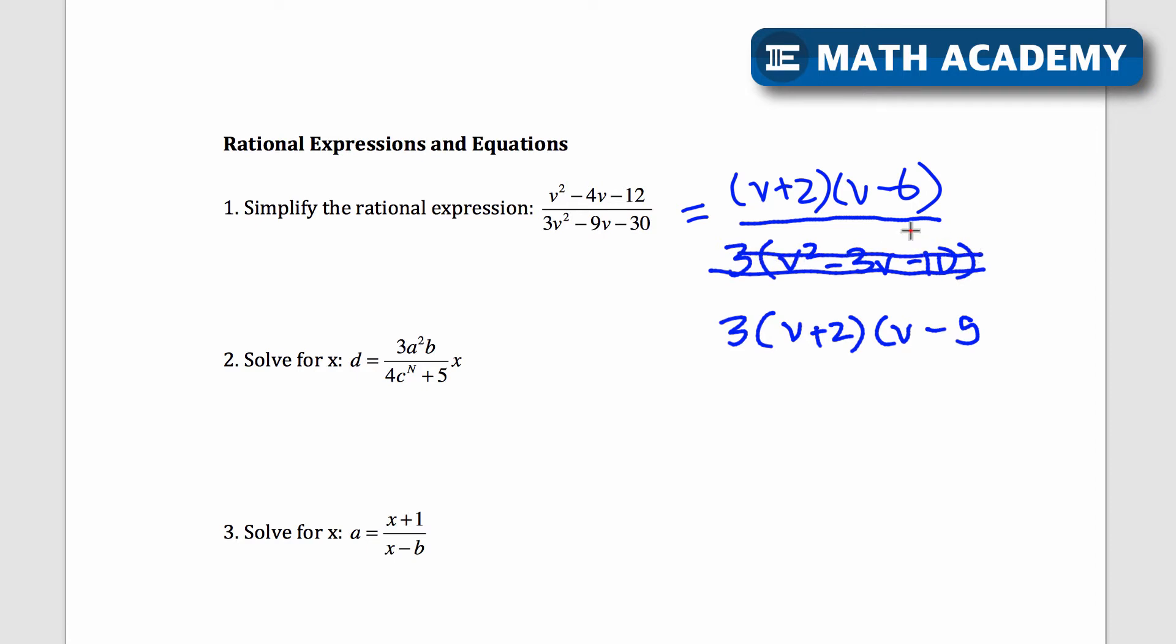So what I could change the bottom into is 3 times v plus 2, v minus 5. Where are the common factors? Well, v plus 2 is going to cancel out. And I'm left with v minus 6 on the top divided by 3 times v minus 5. Or I could write the bottom as 3v minus 15. So that's number one.